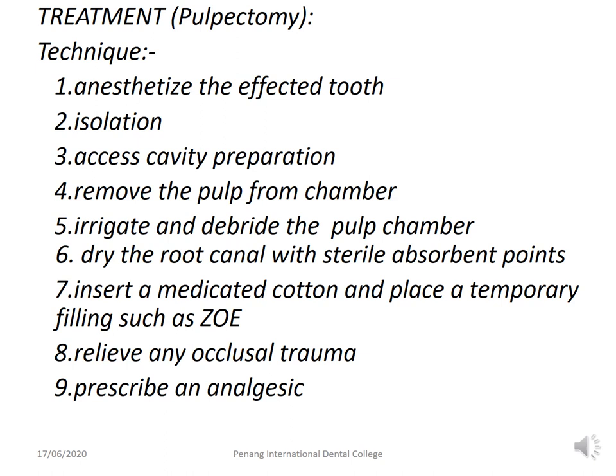Treatment for symptomatic irreversible pulpitis is usually pulpectomy. Anesthetize the affected tooth, isolate with rubber dam, and prepare an access cavity. Remove the pulp from the chamber, irrigate and debride the pulp chamber — the preferred irrigant is sodium hypochlorite. Dry the root canal with sterile absorbent points, insert medicated cotton, and place a temporary restoration such as zinc oxide eugenol. Relieve any occlusal trauma, prescribe an analgesic, and call for the next appointment.